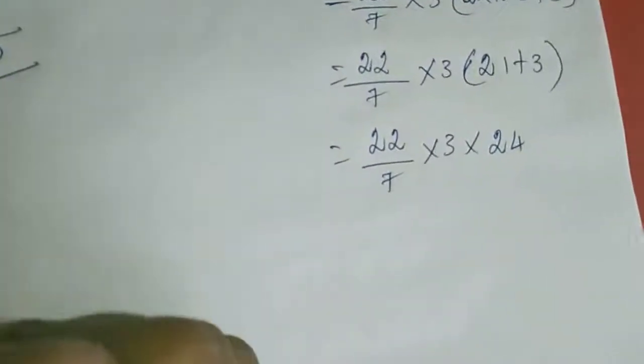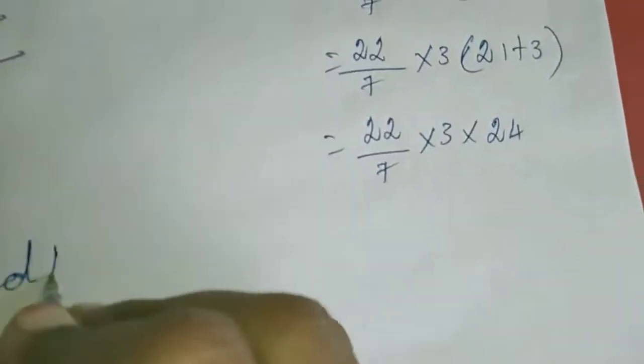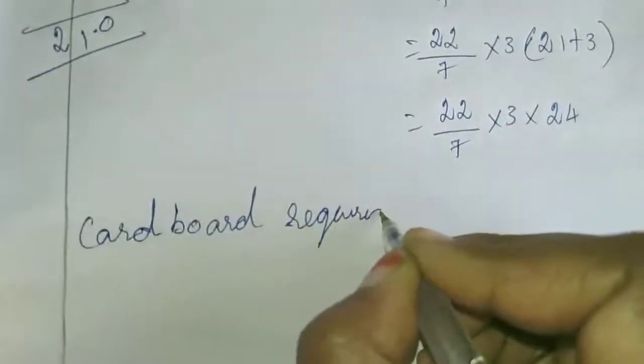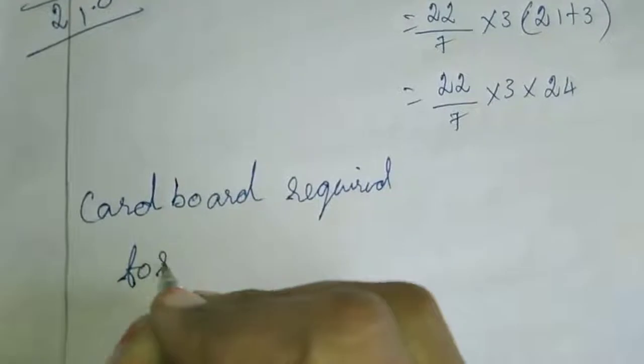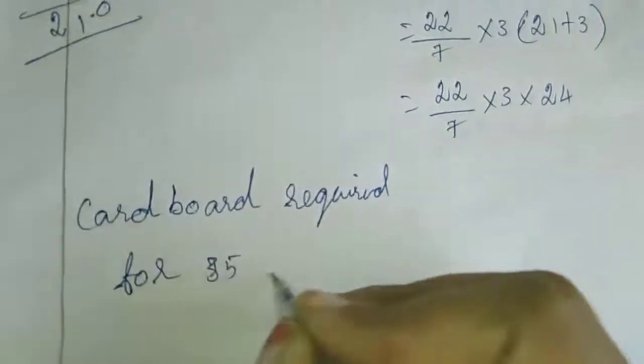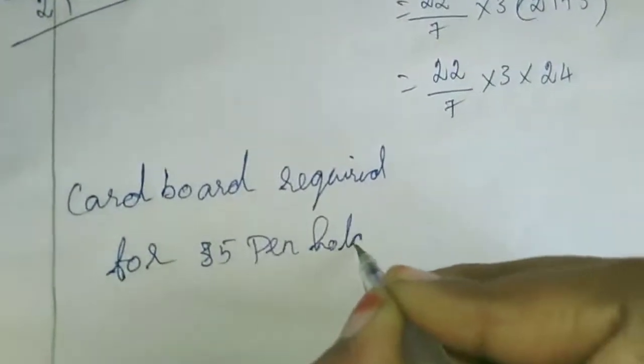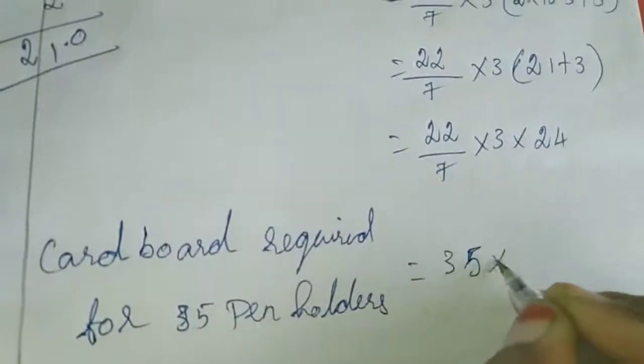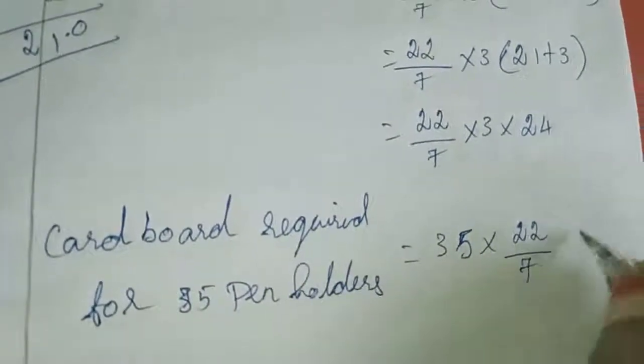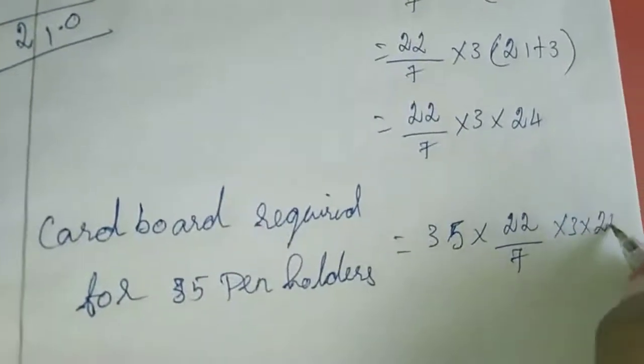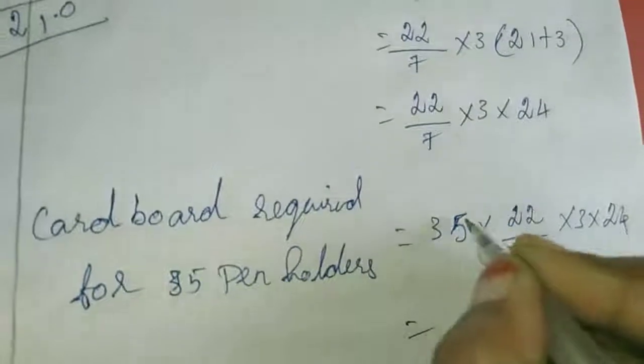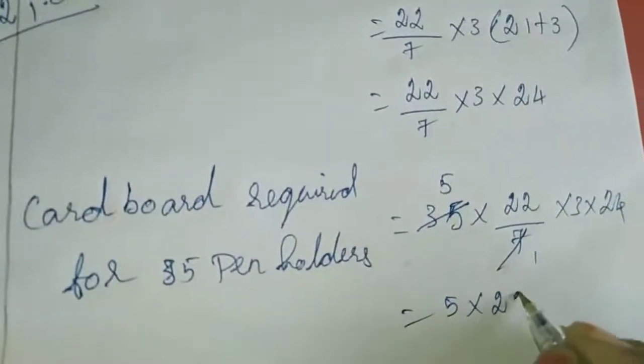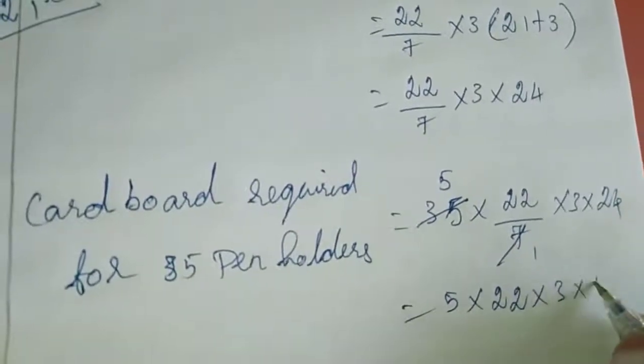So cardboard required for 35 pen holders equals 35 into this one. So 35 into 22 by 7 into 3 into 24. 7 and 35 cancel to give 5. So 5 into 22 into 3 into 24.